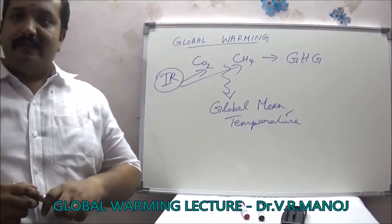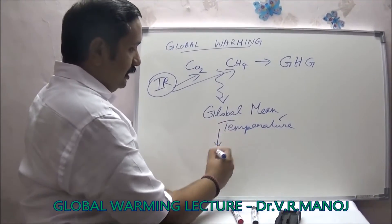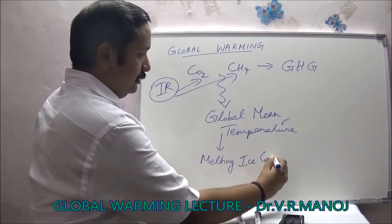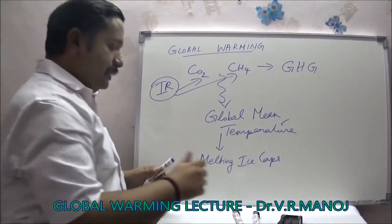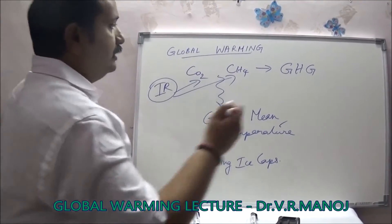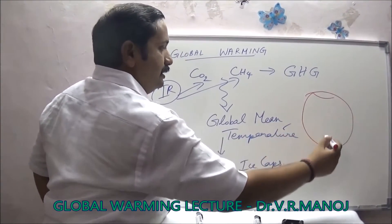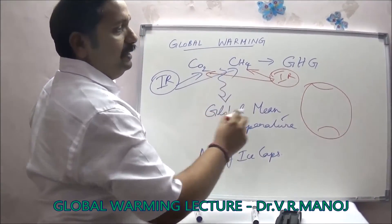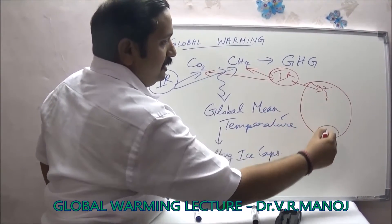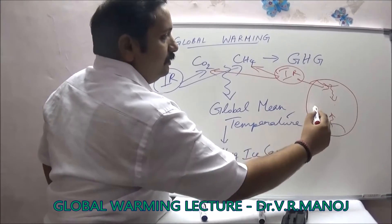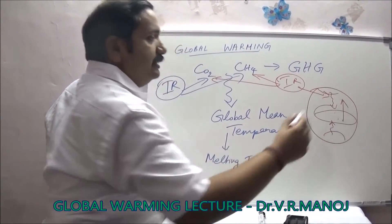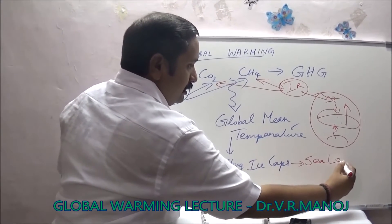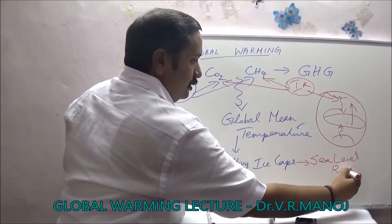Once global mean temperature rises, this will lead to melting ice caps. This means that you have our planet Earth with ice at the poles, and when IR radiation is incident on carbon dioxide and methane, the ice starts melting. This adds to the water already present in the ocean, thus raising the sea level.